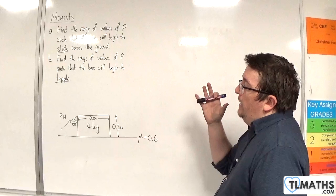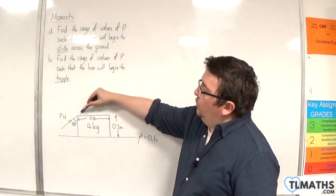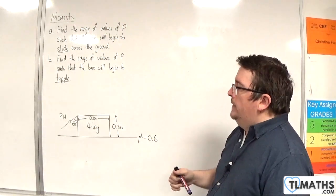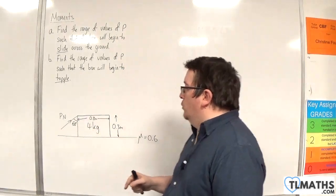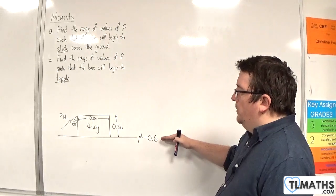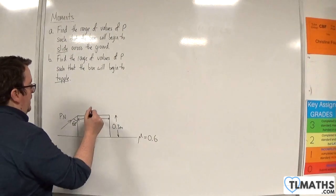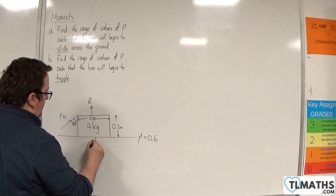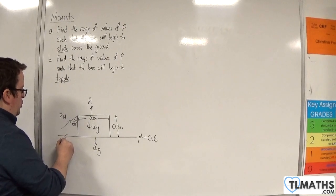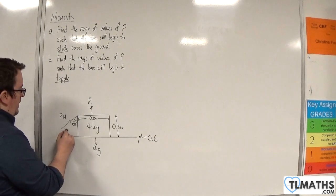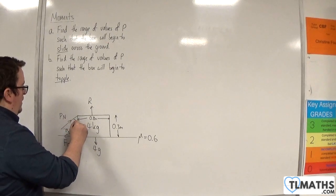In this example, we have a box modelled as a rectangular lamina. It has a mass of 4 kilos, a width of 0.8 metres and a height of 0.3 metres. It's being acted on by a force of P Newtons at 60 degrees to the vertical in the top left-hand corner. The coefficient of friction between the box and the surface is 0.6. We label all the other forces onto our diagram: the normal reaction force, the weight acting vertically downwards which is 4g, and the frictional force acting to the left. We can break the P Newtons force into its components: P sine 60 and P cosine 60.